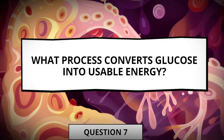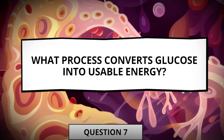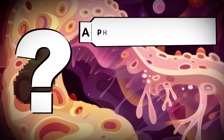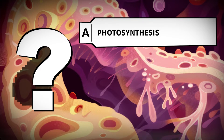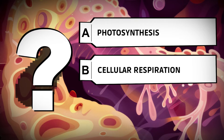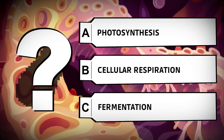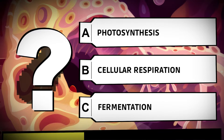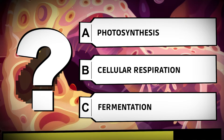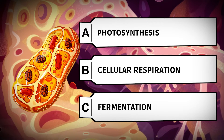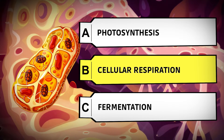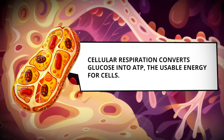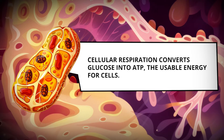What process converts glucose into usable energy? Photosynthesis, cellular respiration, fermentation. Cellular respiration converts glucose into ATP, the usable energy for cells.